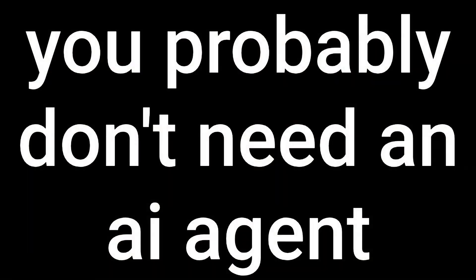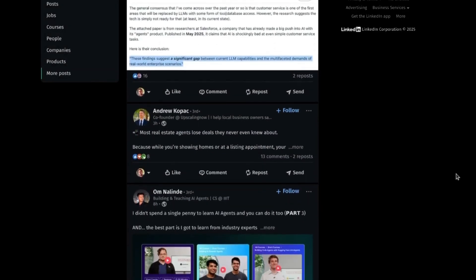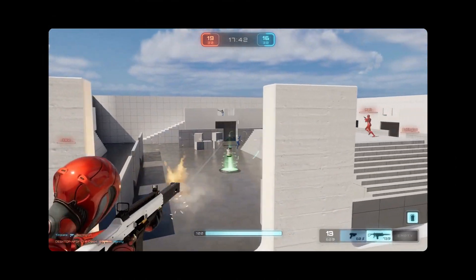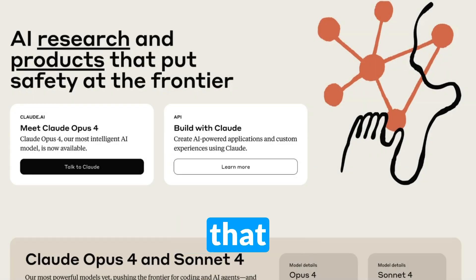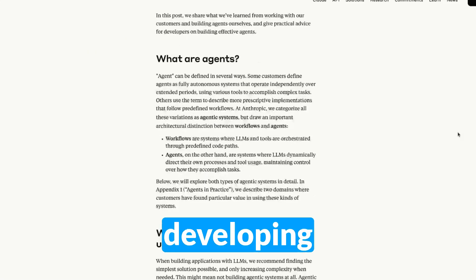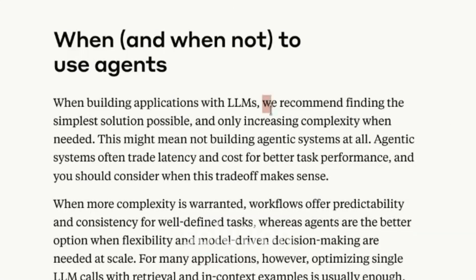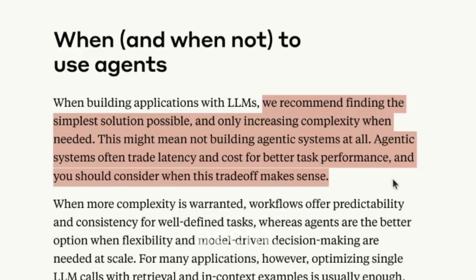Here's a hot take: you probably don't need an AI agent. Everyone on LinkedIn is raving about agents as the solution to any AI-related problem, but for a lot of them, they are overkill. According to Anthropic, the company that develops Claude — arguably the best LLM for coding — when developing an AI solution, always use the simplest solution possible. This might be a predefined workflow instead of an agent.